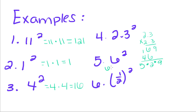6 times 6 equals 36. And when we have a fraction, you square the top and square the bottom.